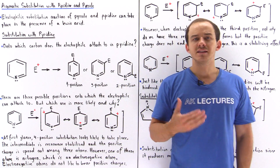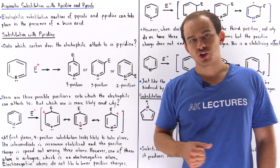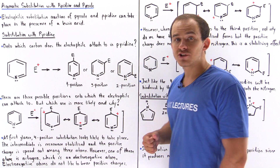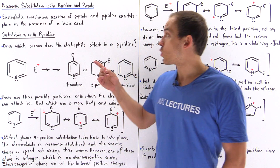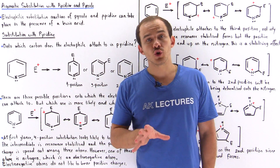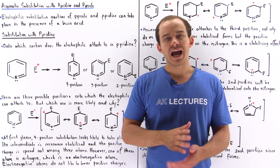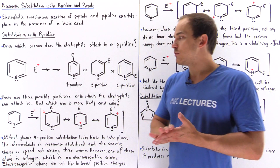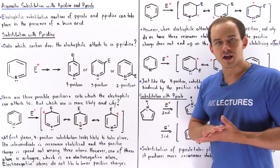Benzene is not the only molecule that can undergo electrophilic substitution reactions. Other aromatic molecules such as pyrrole and pyridine can also undergo electrophilic substitution reactions, and these are the two molecules that we're going to focus on in this lecture.